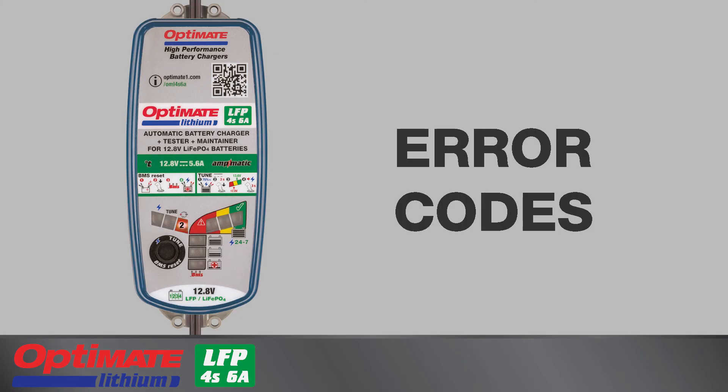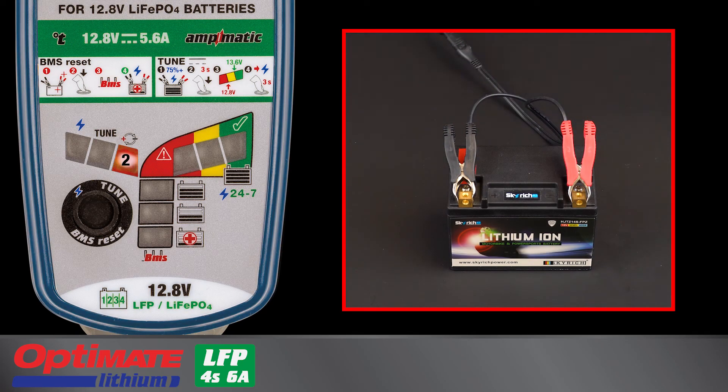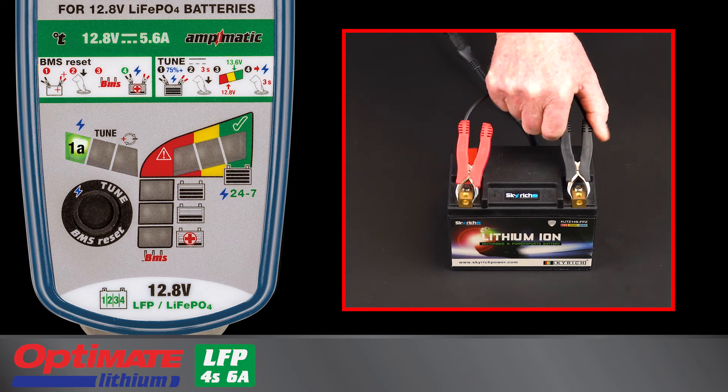The Optimate Lithium displays three different error codes. Lamp 2 lights if a battery with voltage 0.5 volts or higher is connected in reverse polarity. Correct the connection before charging the battery.